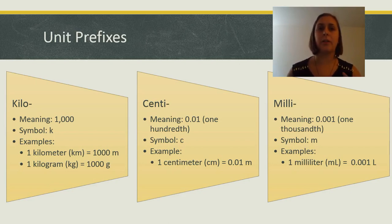What if you want to measure smaller things, even smaller than a meter, even smaller than a gram? Well, then you could use the prefix centi. It means 0.01 or one hundredth. The symbol is C. For example, one centimeter equals one hundredth of a meter.